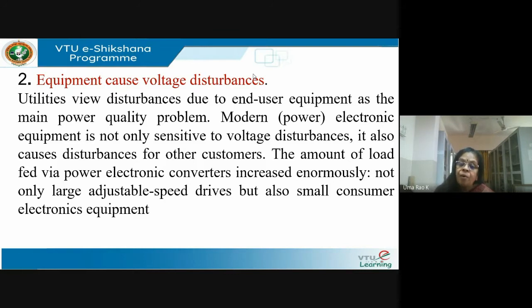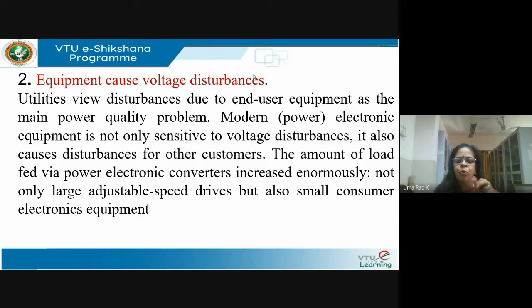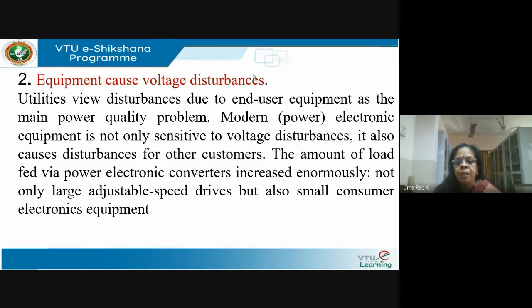Equipment ratings have also gone up — today you have motors of 10,000 HP. When a motor of this size starts, the current drawn is huge and it causes a sudden voltage dip. We are all familiar with this at home: when you switch on a water pump or geyser, the lights dim. In interconnected systems, a disturbance somewhere gets percolated and others also feel it.